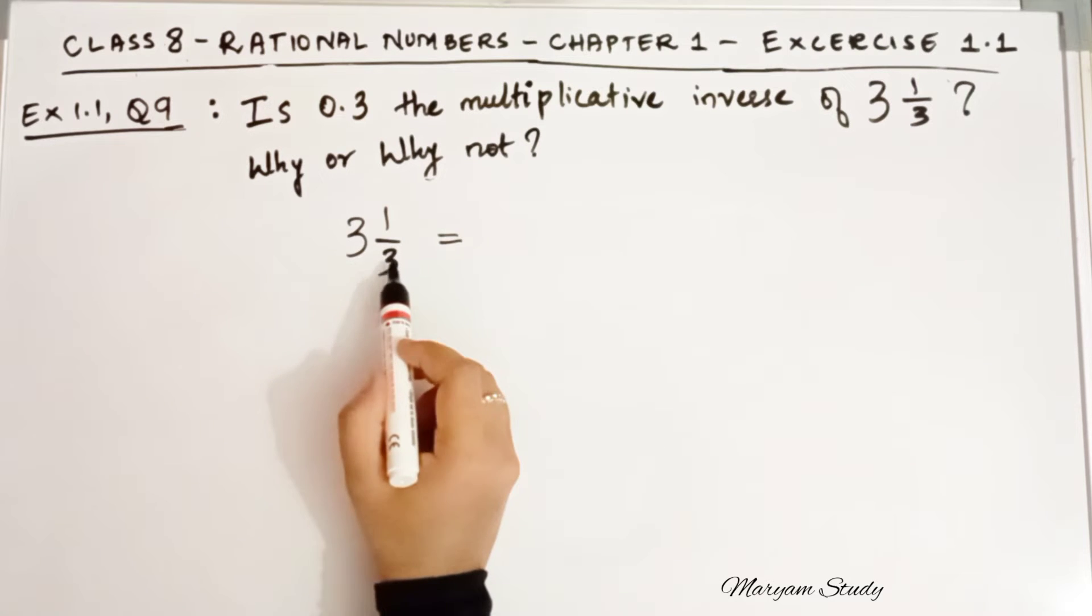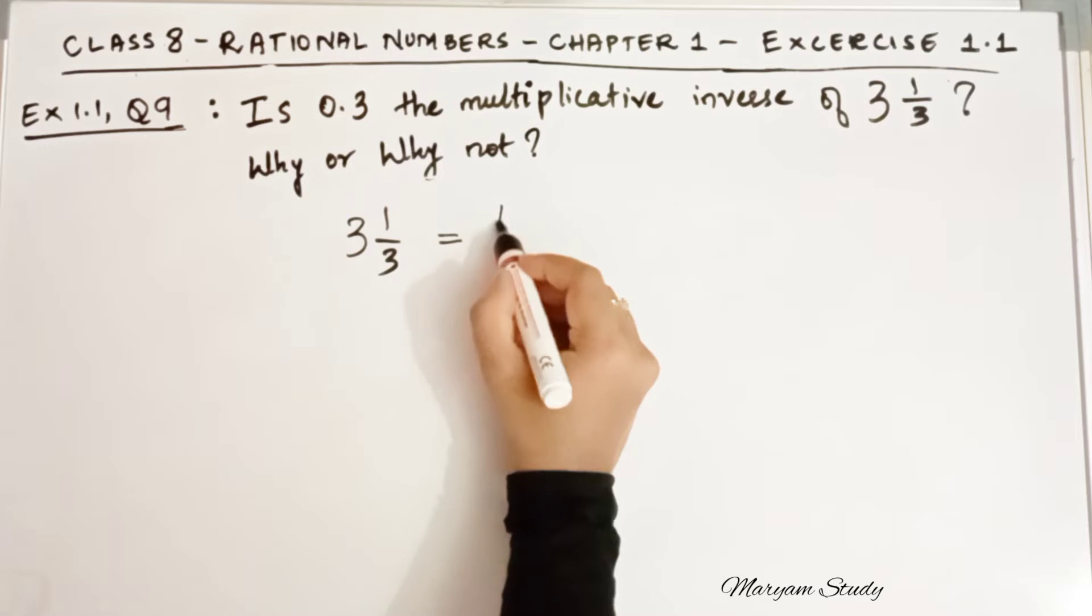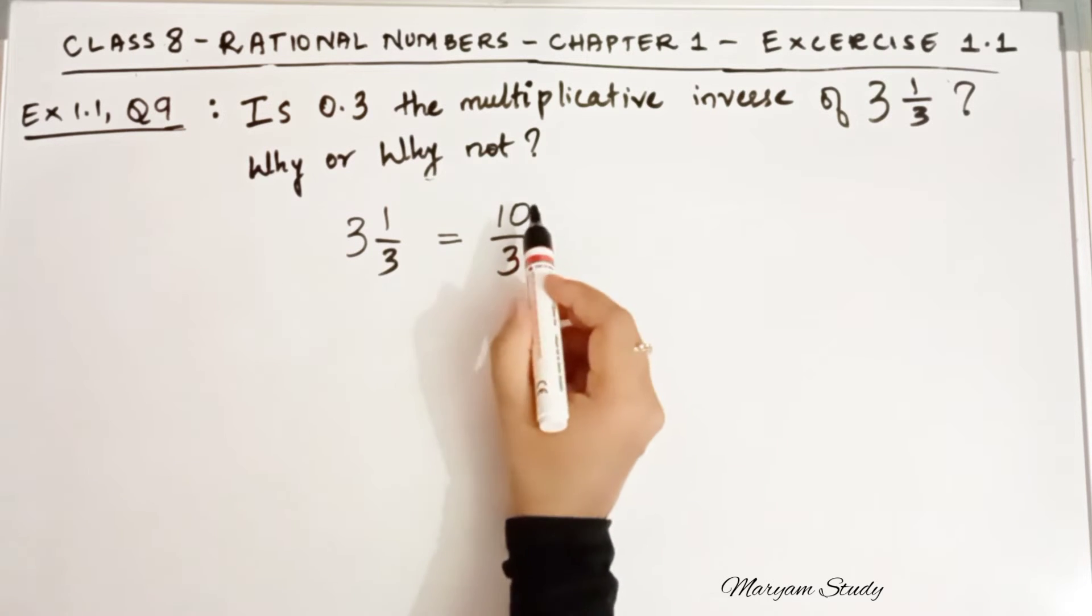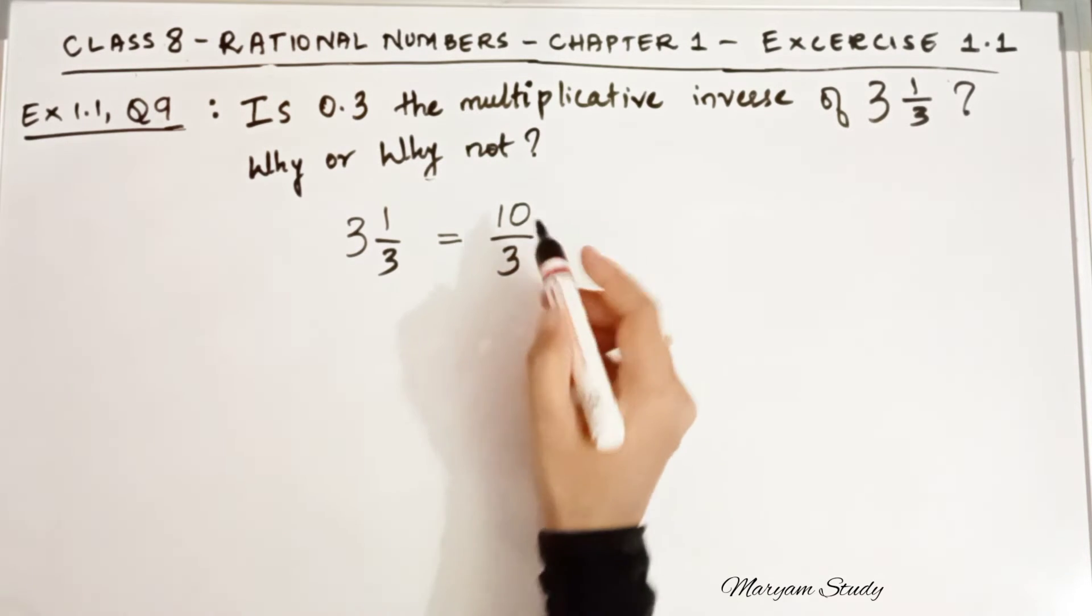So how do we do this? 3 times 3 is 9. 9 plus 1 is 10. So 10 by 3. So 3 1 by 3 is 10 by 3.